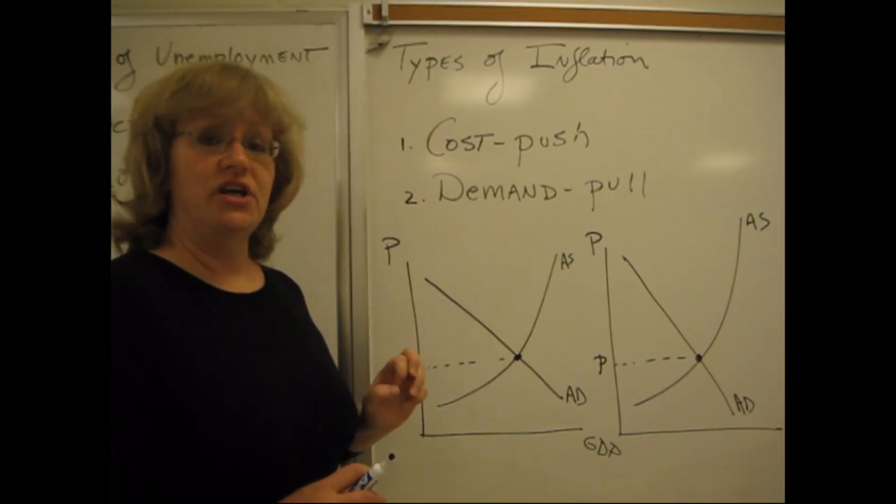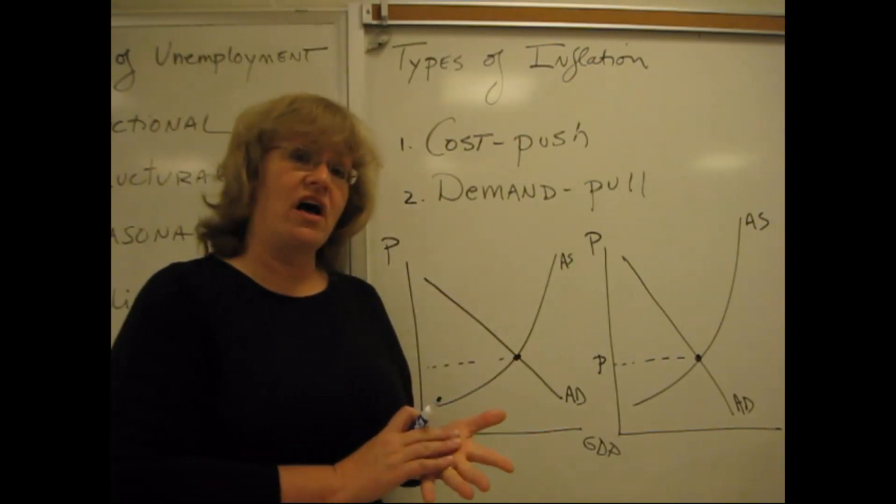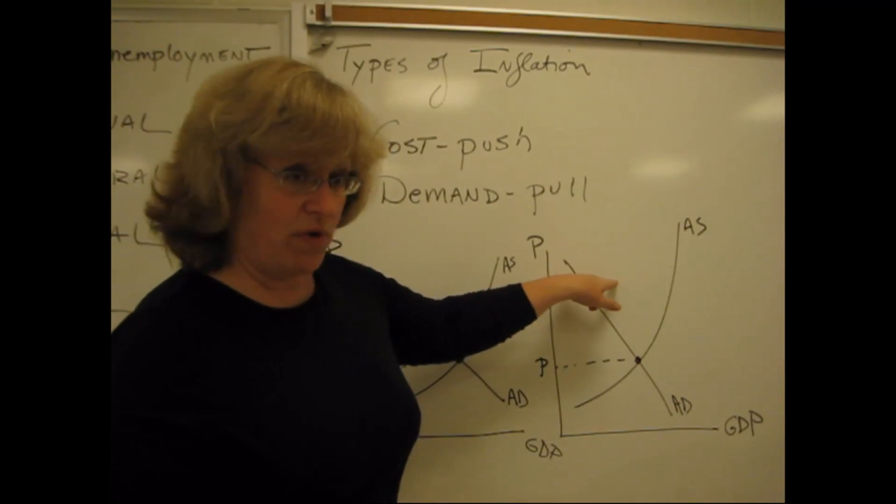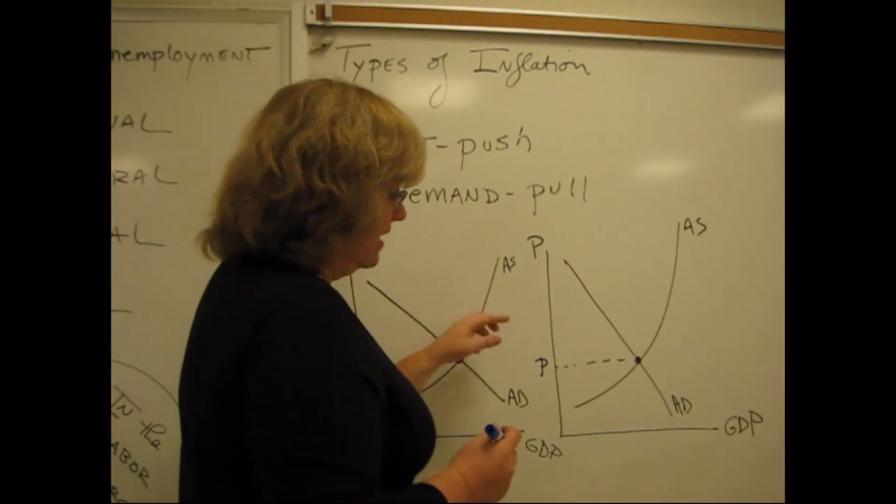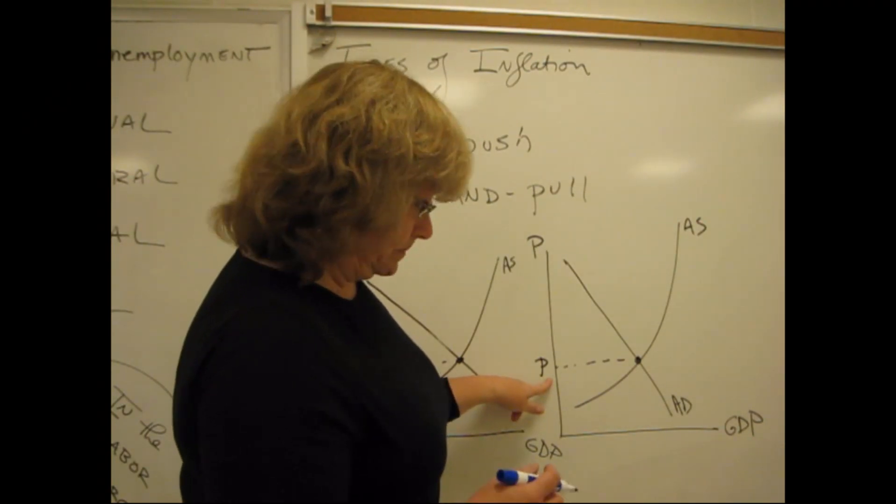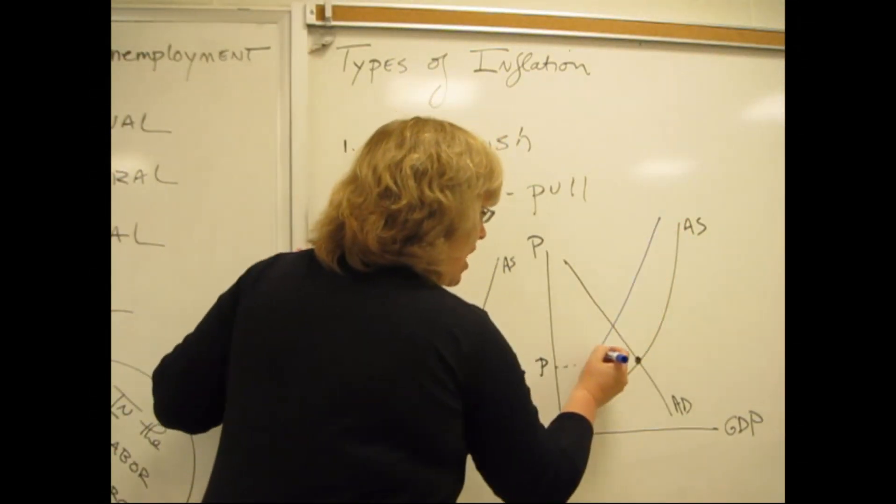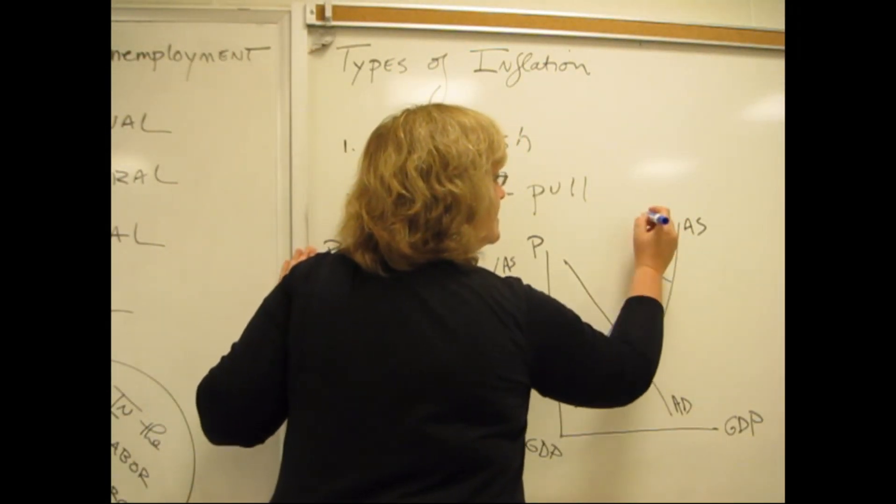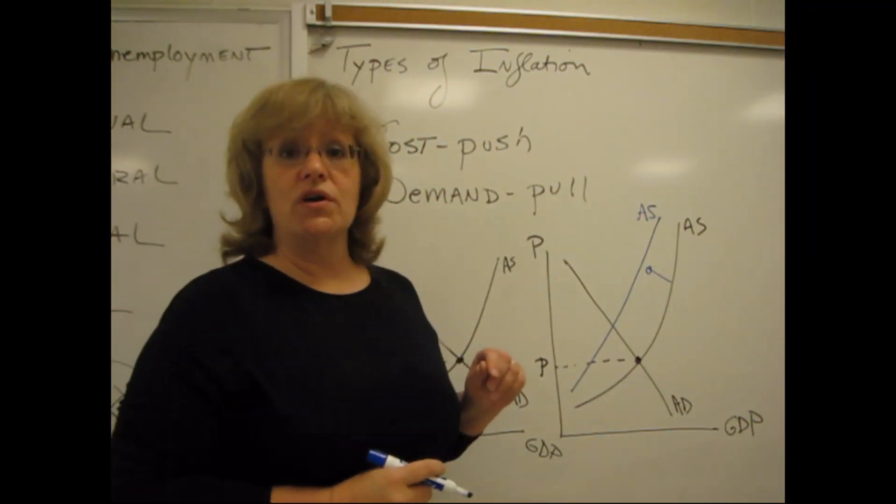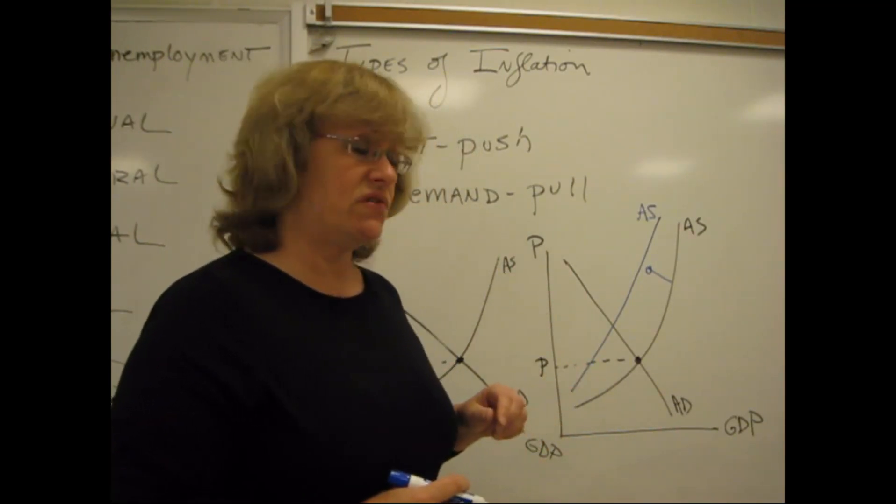Cost push inflation comes from the supply side. Cost push inflation comes when the cost of inputs, the cost of producing something goes up. And let me use this one right over here to show you what that's like. If I start off here with this price level being the equilibrium price level, and this country experiences cost push inflation, prices get pushed up because of a leftward shift in the supply curve.